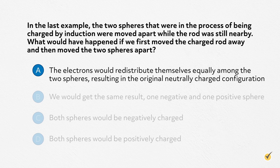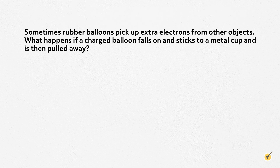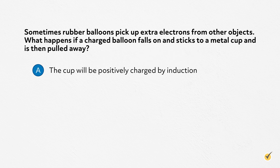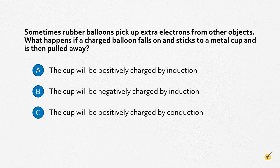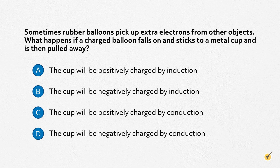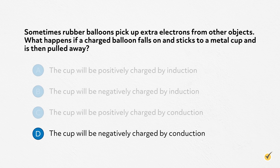Like charges repel, so the electrons do not want to be bunched up if there's not a positive charge nearby. Number two. Sometimes rubber balloons pick up extra electrons from other objects. What happens if a charged balloon falls on and sticks to a metal cup and then is pulled away? A, the cup will be positively charged by induction. B, the cup will be negatively charged by induction. C, the cup will be positively charged by conduction. Or D, the cup will be negatively charged by conduction. The correct answer is D. The negatively charged balloon touches the cup and leaves it with a surplus of electrons. The electrons move from the balloon to the neutrally charged cup because it has less of an overall negative charge compared to the balloon.